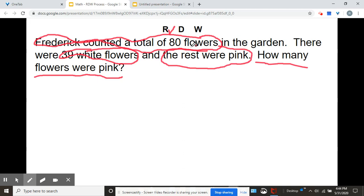And we don't know how many are pink. That's what we want to find out. We know that Frederick counted a total of 80 flowers. 39 were white. The rest were pink. I don't know how many were pink. We're going to find out. Now it's time for us to do the D, which is draw and label.